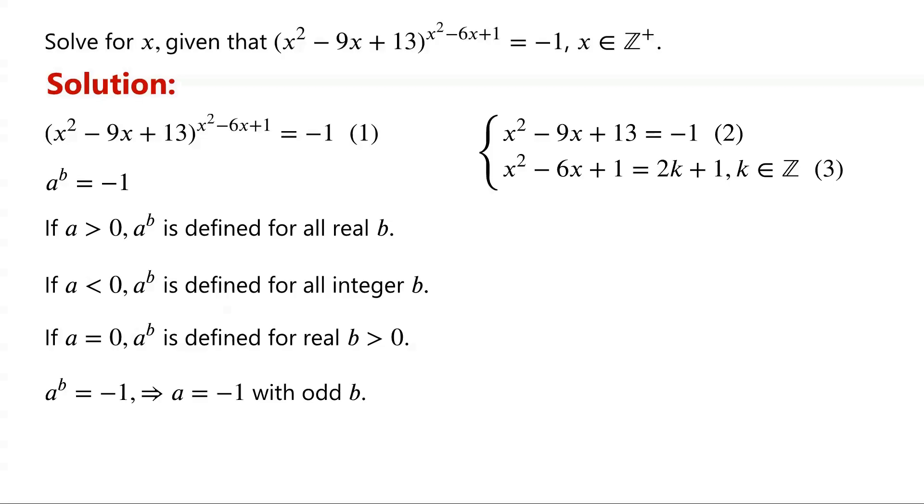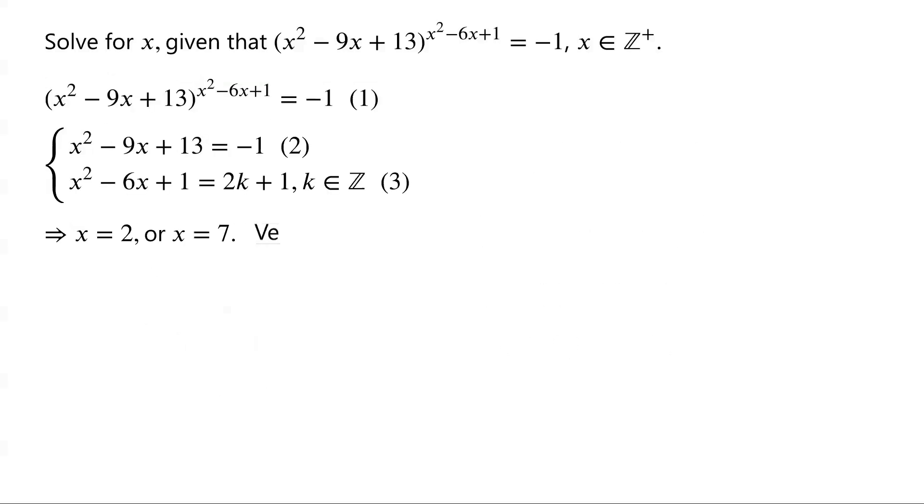From equation 2, we have x squared minus 9x plus 14 equals 0. That is, x minus 2 times x minus 7 equals 0. So, either x equals 2 or x equals 7. Now we verify whether they are solutions of the original equation.